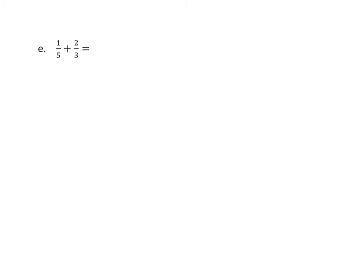Here's one where common multiples don't make much sense, because 5 and 3 give us 15, and there are no common multiples other than 15. If I think of multiples of 5: 5, 10, 15 — and that brings us right to where cross-multiplication would take us. So we find our common denominator by multiplying the two denominators: 5 times 3 is 15. Cross multiplying: 3 times 1 is 3 and 5 times 2 is 10. We get 13 fifteenths.